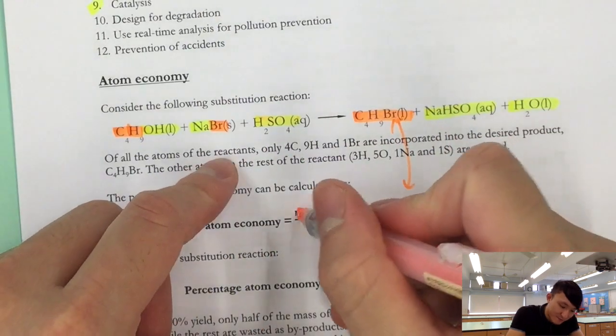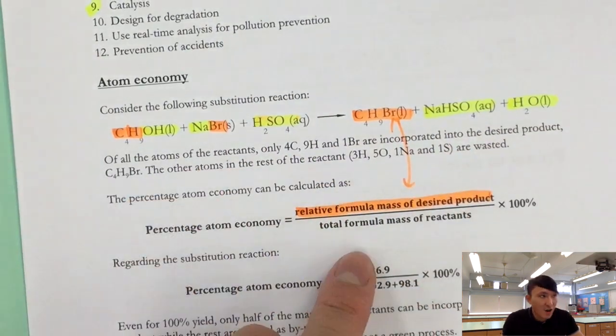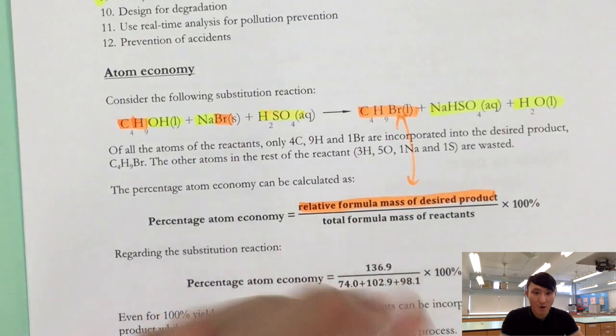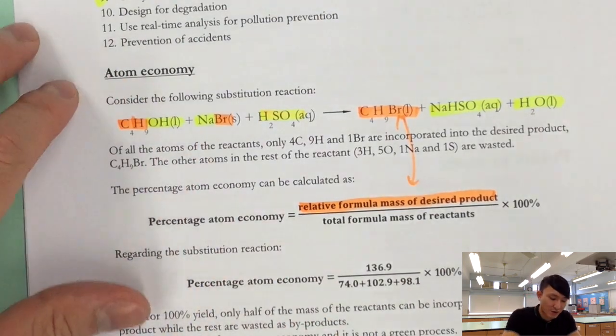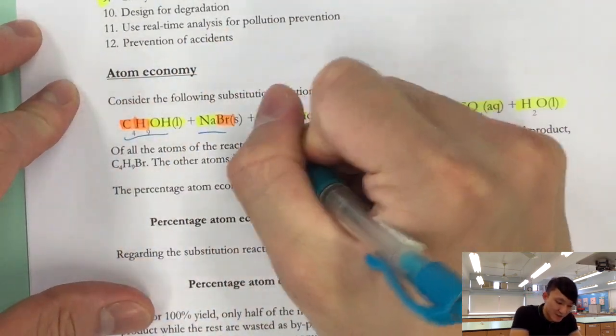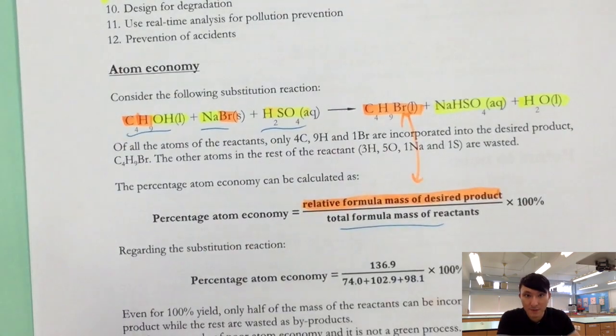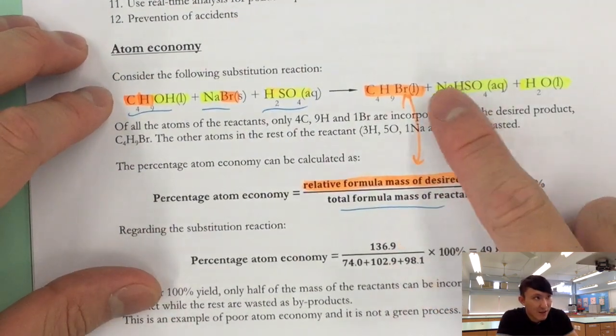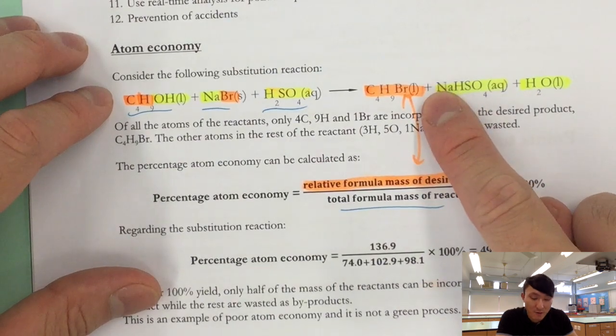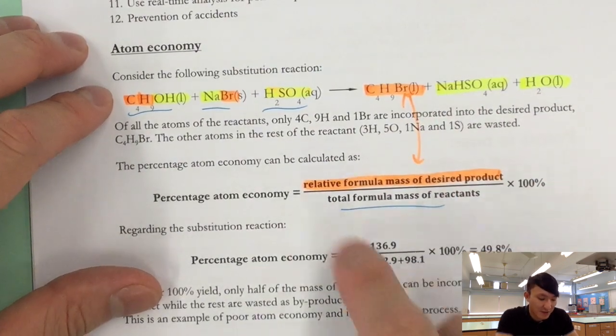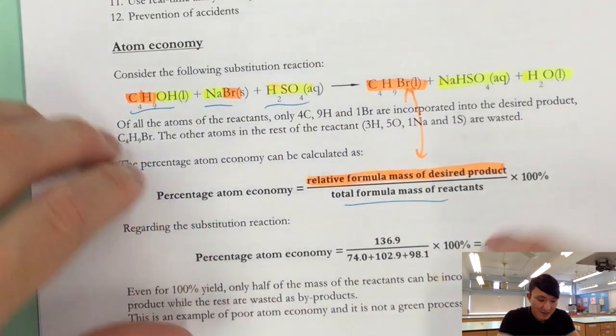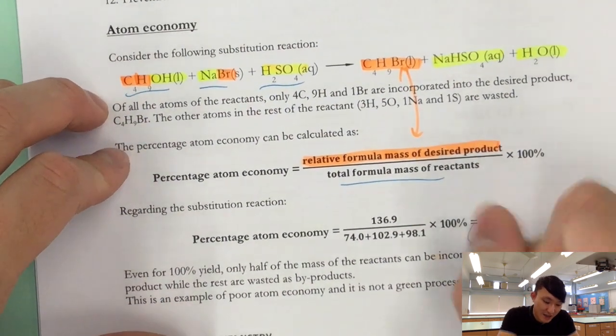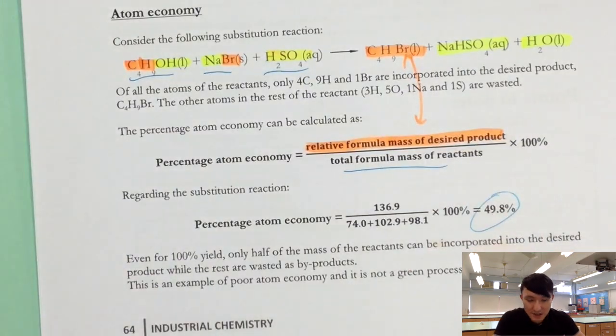So the numerator would be the relative formula mass of bromobutane and the denominator would be these three added together. Multiply by 100% and then we get around 50%.